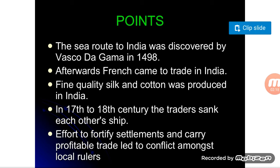The sea route to India was discovered by Vasco da Gama in 1498. He was a Portuguese explorer, so the Portuguese were the first to come to India. Then the French came to trade in India using the same route. Fine quality silk and cotton was produced in India — that is why they came to India, attracted by its prosperity.